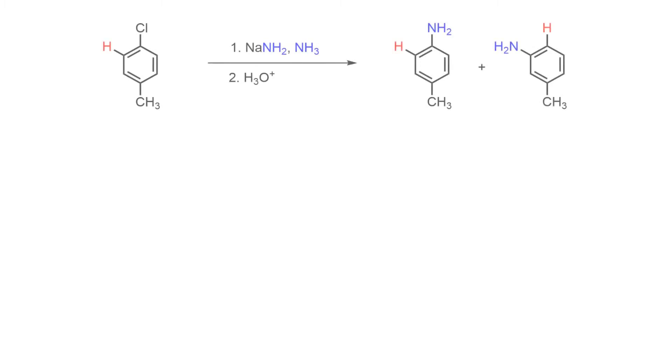When a molecule such as 4-chlorotoluene is reacted with a powerful base such as sodium amide and ammonia as the solvent, two regioisomeric products are formed.